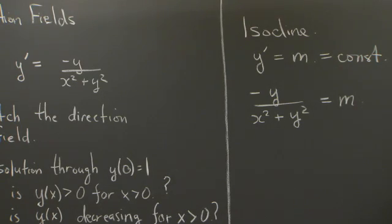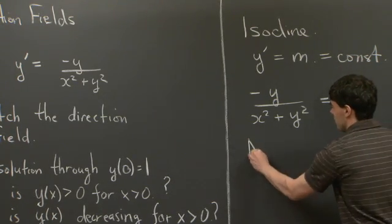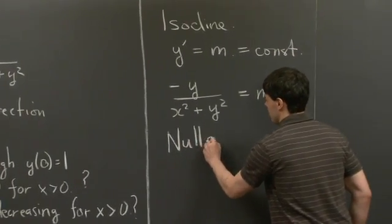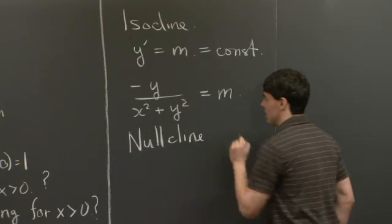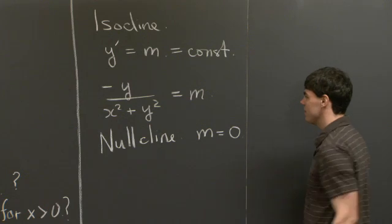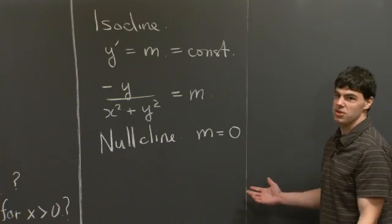Now, of particular interest, there's a very special isocline, which is usually the easiest to plot. And that's a nullcline. And this is just the special case where m is equal to 0.